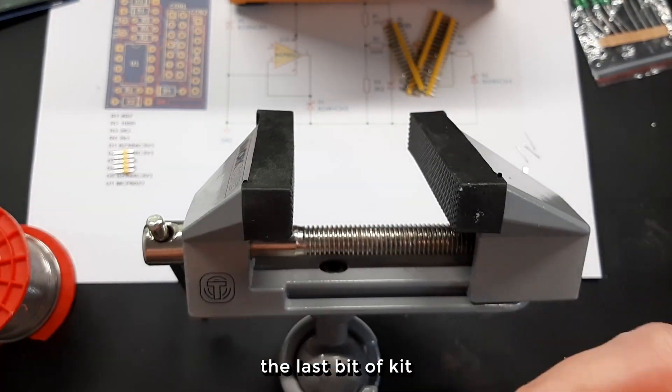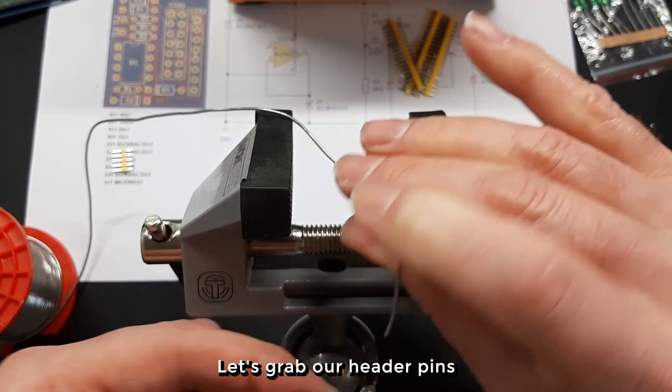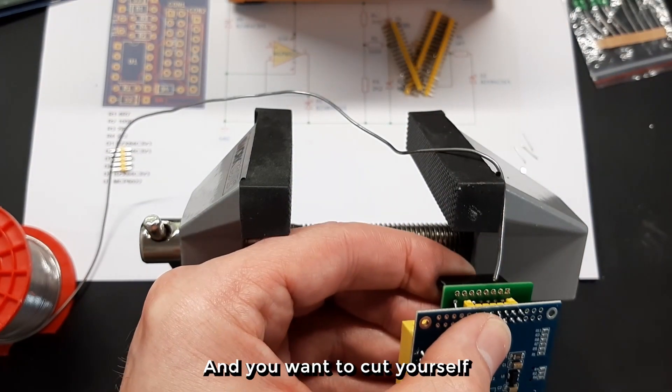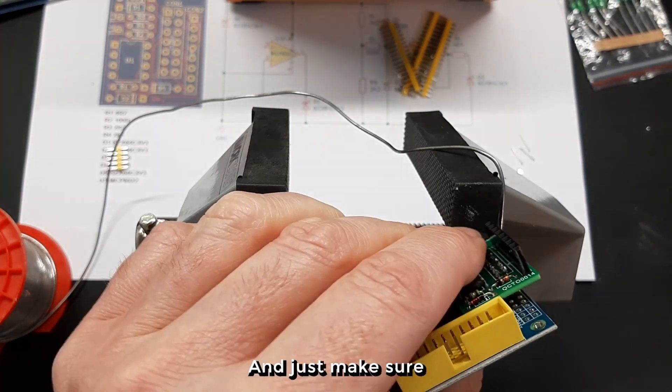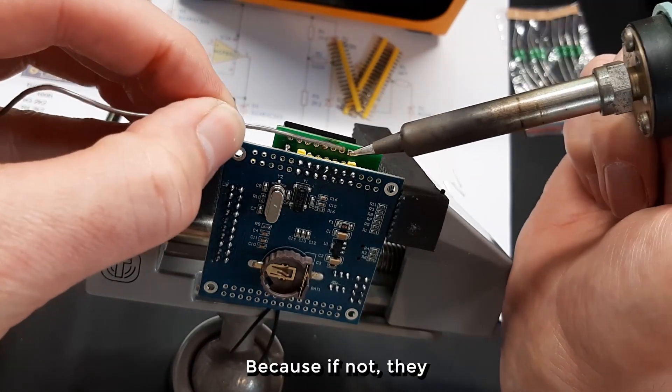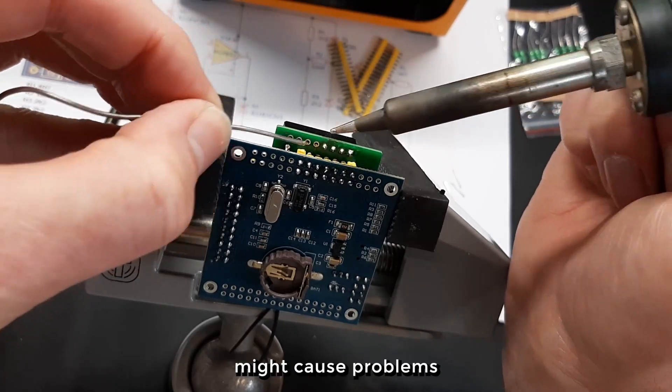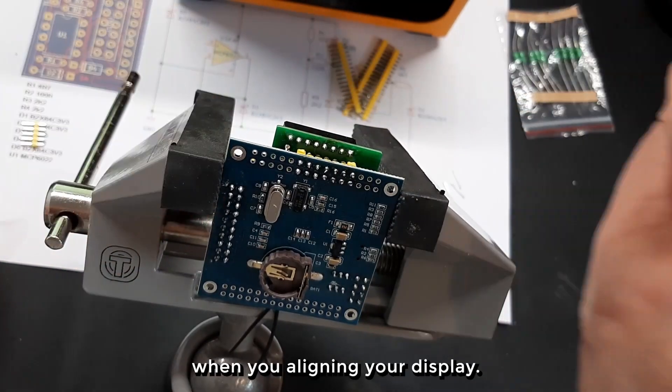Now, pretty much the last bit of kit to solder on. Let's grab our header pins and you want to cut yourself eight header pins. It's best to solder them on at this stage and just make sure these are straight enough as well, because if not they might cause problems when you're aligning your display.